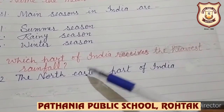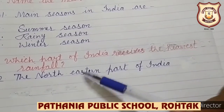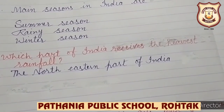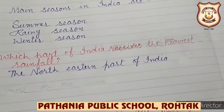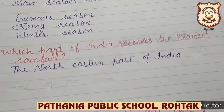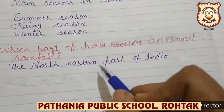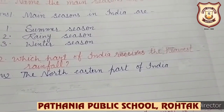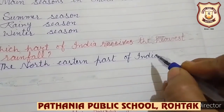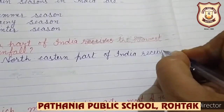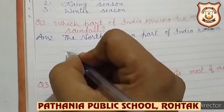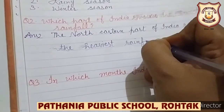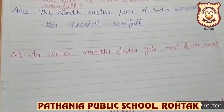Question number 2: Which part of India receives the heaviest rainfall? We have to write the part, not the specific place. As you know, Mawsynram in Meghalaya receives the heaviest rainfall in the world. Mawsynram is in the northeastern part. So the answer is: the northeastern part of India receives the heaviest rainfall.